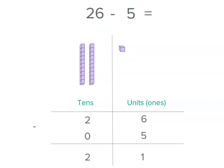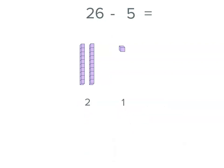And you'll see I've actually removed the models of the units that we subtracted. And we've got 2 tens and 1 of the units left. Let's have a look. 2 tens and 1 unit is 21.